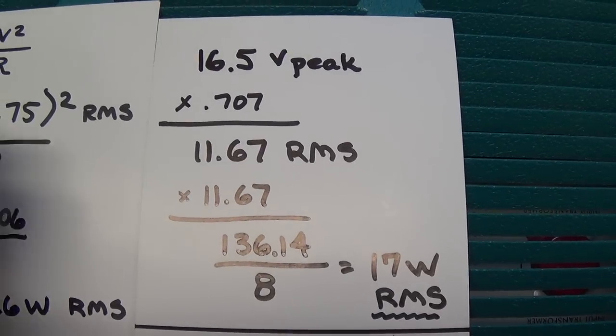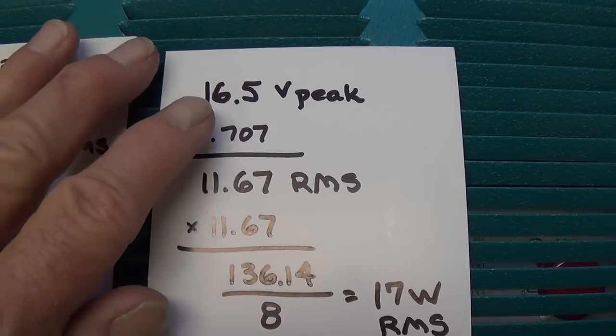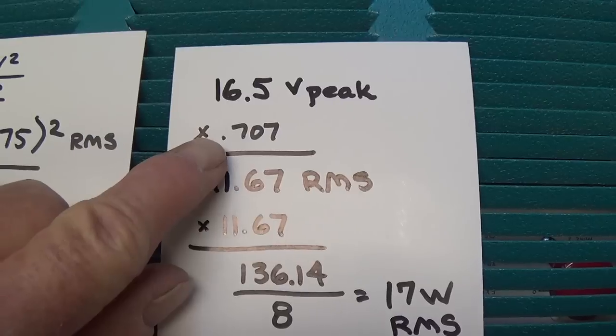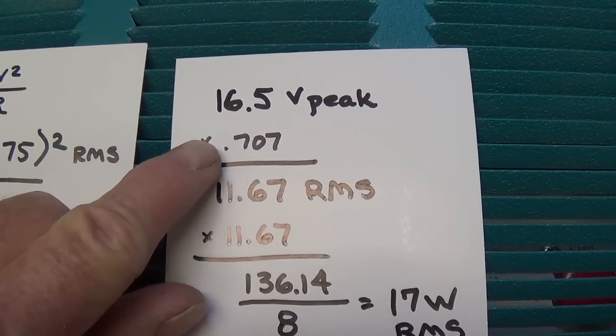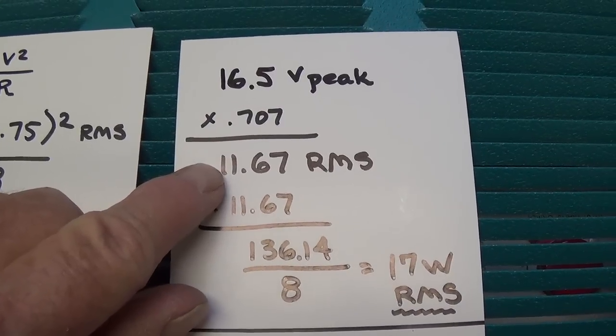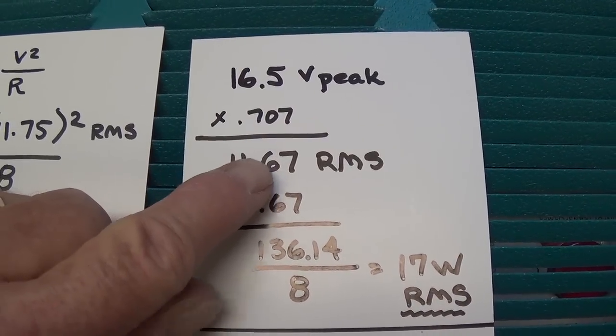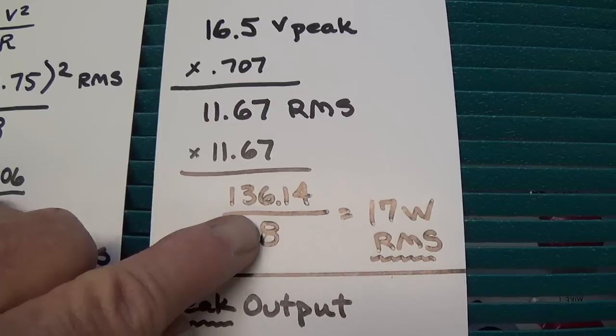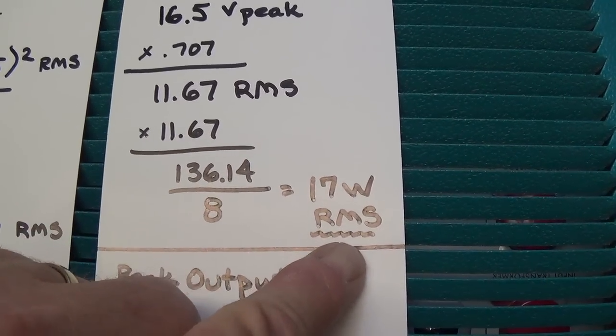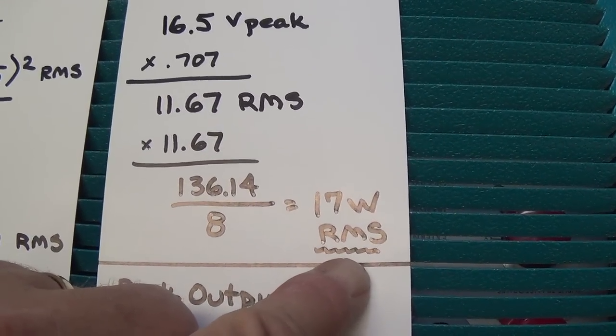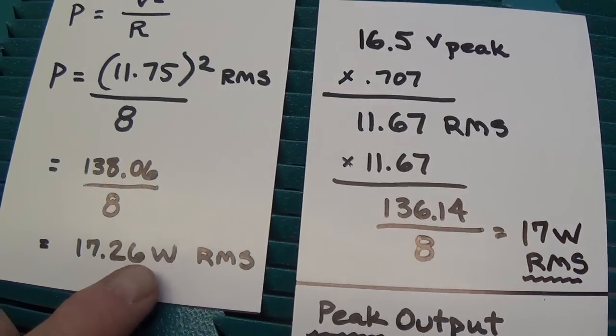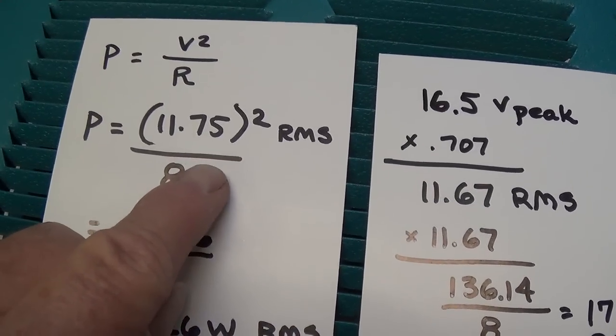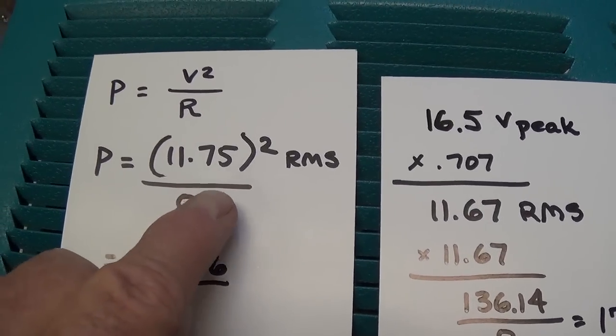Now let's look at the calculation if we'd use the oscilloscope measurement of 16.5 volts peak. First off, you have to multiply times 0.707 to reduce it to its RMS value of 11.67. Then square it, divide it by 8, and we get 17 watts RMS output using the oscilloscope measurement, or 17.26 watts RMS output using what I think is probably more accurate, which was the voltmeter.